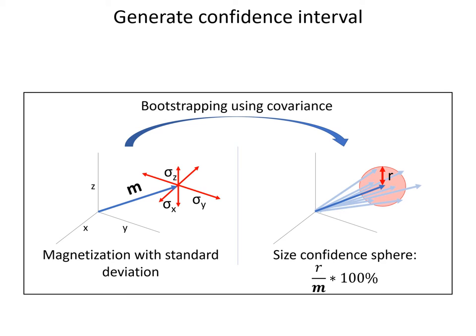However, the standard deviation is in three directions in the Cartesian coordinate frame, as you can see on the left side. But we want to reduce this to one uncertainty parameter for the sake of simplicity. To this end, we choose to construct a confidence sphere around the magnetization vector, as you can see over there.